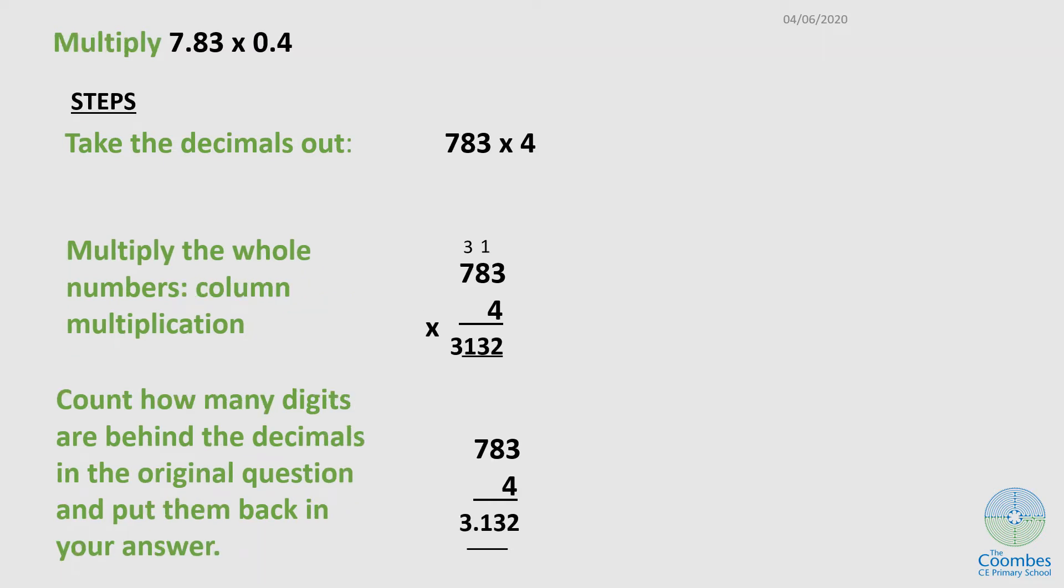Let's do a second one. How will you multiply 7.86 times 0.4? First step, let's take out the decimal point. For my first decimal, I will have 786 times 4.